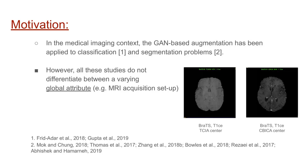However, all these studies do not differentiate between a varying global property, such as a varying acquisition setup. Neglecting this can negatively affect the synthesis performance, since GAN networks, not being instructed to separate between different global classes, would generate images of either a random class or some average global class appearance.